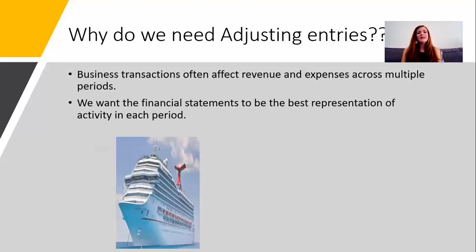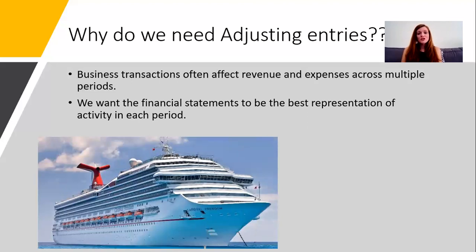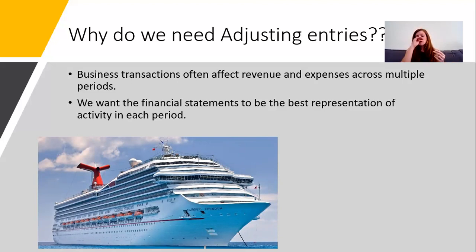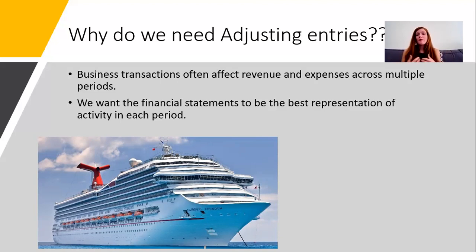Let me give you an example. If you read the beginning of chapter four, it gives you an example about cruise ships. When you book a cruise, you typically pay a portion upfront right when you purchase it, then a little more a few months before the cruise, and then the final balance when it's time to actually go on the trip. So how does the cruise company reflect revenue? If I give them money in September for a cruise in December, do they recognize revenue in September or in December? Because they haven't actually done anything for that money I've given them in September.